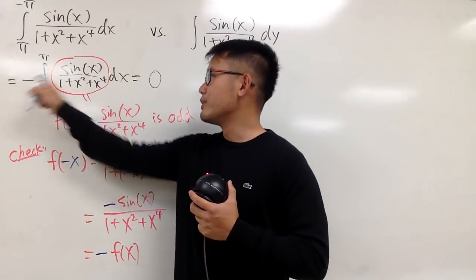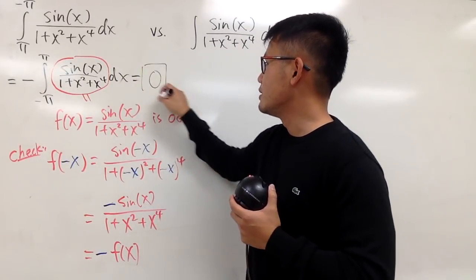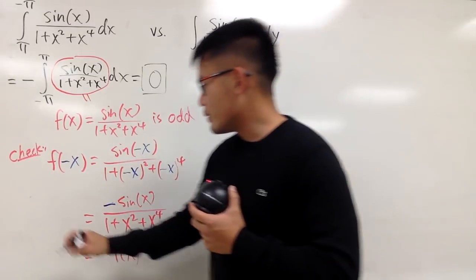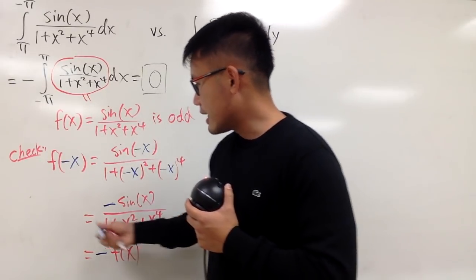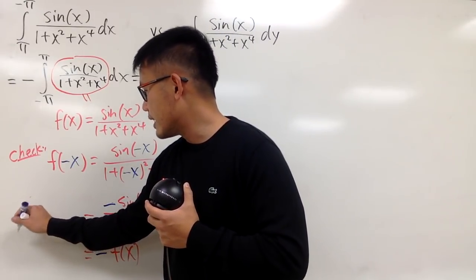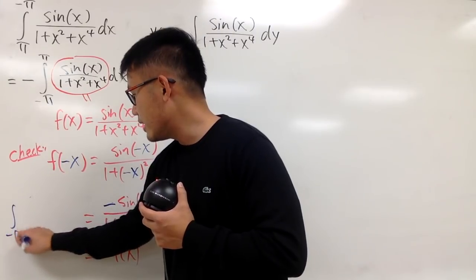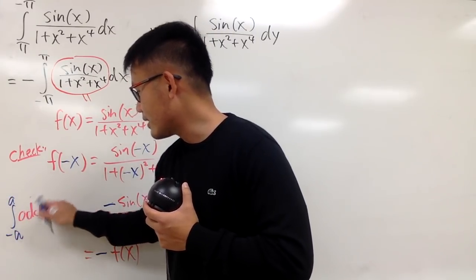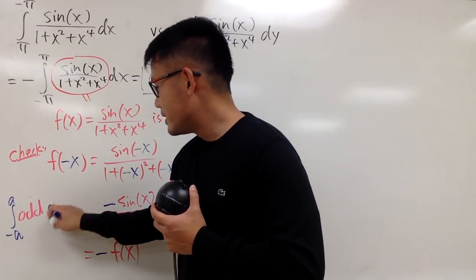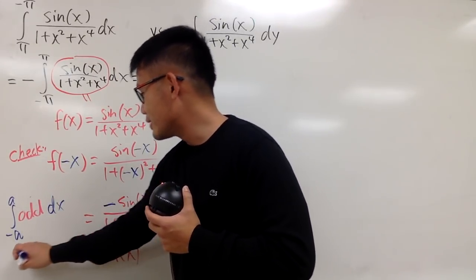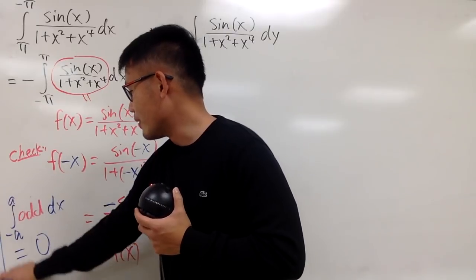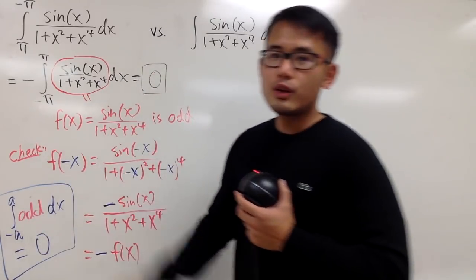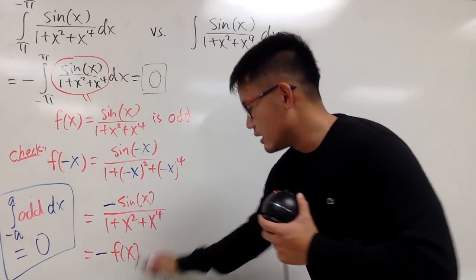And technically, you put a negative 0, but who does negative 0, right? So the answer is 0. So perhaps I'll also write down a note on the side. This right here says that if you have negative a to a of an odd function, so just put an odd function like this, d whatever, let's say dx. This right here is just equal to 0. This is one of the integral properties.